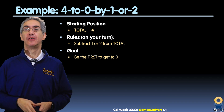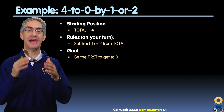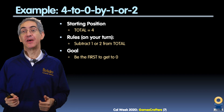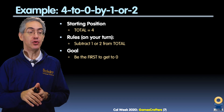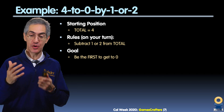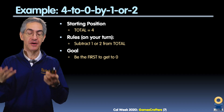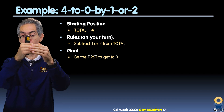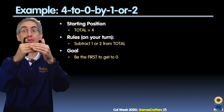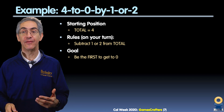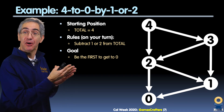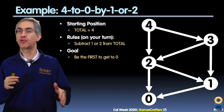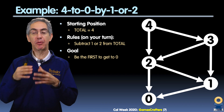Let's ground this with an example — the simplest game we could think of: 4-to-0 by 1 or 2. You start with 4 coins on the table. On your turn, you can take 1 or 2 coins away, and the person who clears the table wins. More precisely, total initializes to 4; on your turn you reduce total by 1 or 2, and the person who brings total to 0 wins. That's the whole game tree — 4 has two moves to 3 and 2, 3 has two moves to 2 and 1, and so on.